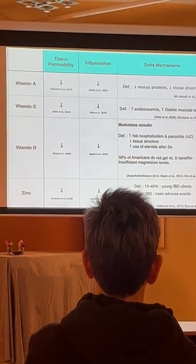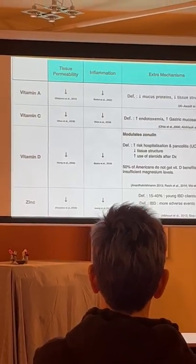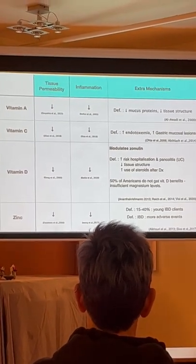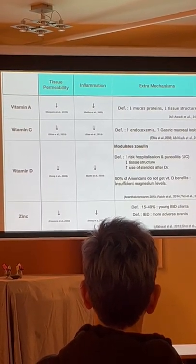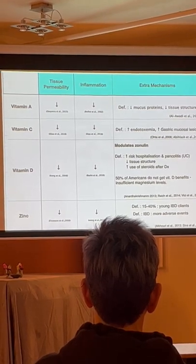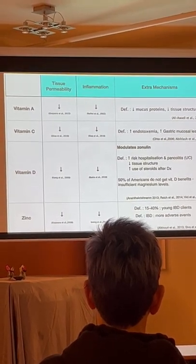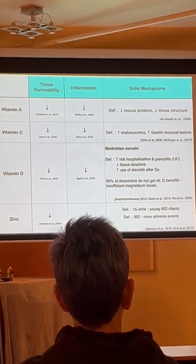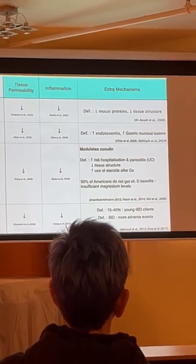So how to tighten up the gut. As you can see here, the arrow is pointing down and the tissue permeability. So that means the connection between the cells is very strong. So vitamin A, vitamin C and vitamin D. Fantastic for helping with that.